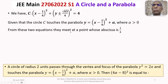When x = 1/4, substituting into the parabola's equation y = (x − 1/4)² + α gives y = α. Therefore, circle C touches the parabola at the point (1/4, α).